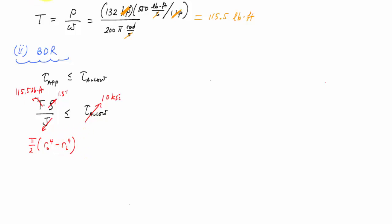So if I go and I rewrite this over here, I would have 115.5 pound feet. I'm going to do a unit conversion so I have inches and everything. So here are 12 inches per foot times 1.5 inches divided by pi over two, the outer radius, which is 1.5 inches to the fourth minus the inner radius to the fourth. And this is less than or equal to 10 Kip per inch squared, which is the same thing as 10,000 pounds per inch squared.